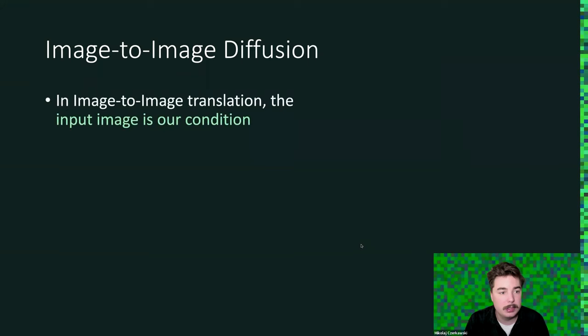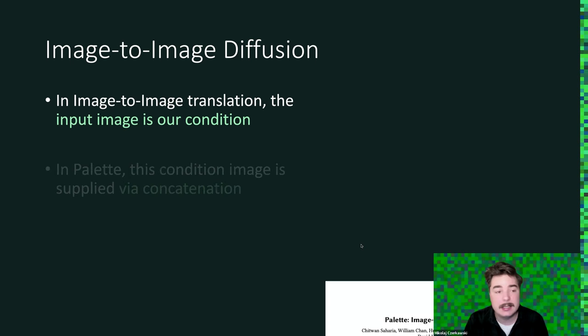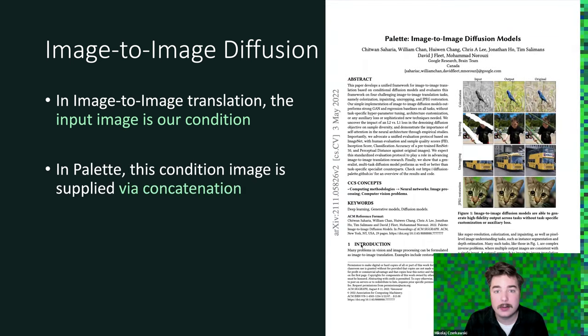For image-to-image diffusion, an image will be our condition. So it will work in a slightly different way. In the work of Palette, this condition is often supplied by concatenating the input condition with the noise sample. Whenever we do diffusion, we often have a model like a UNet where it takes a noisy image and it predicts the noise present in that image.